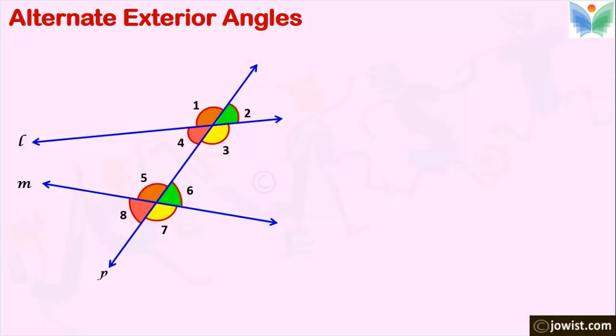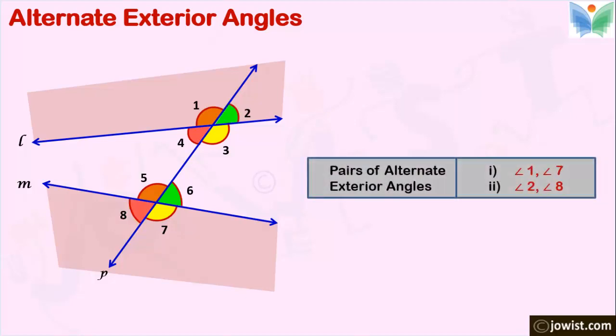Now let's identify the alternate exterior angles. First let's shade the exterior part of lines L and M. Now we know that we have 4 exterior angles: 1, 2, 7 and 8. The odd pair 1 and 7 and the even pair 2 and 8 are the alternate exterior angles.